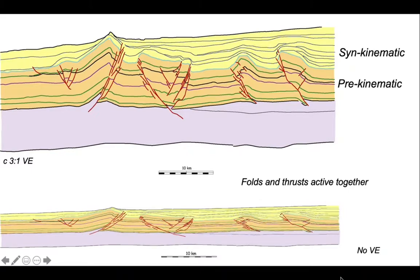So the base of the yellow package of rocks in this interpretation is deformed and that unit forms a growth succession across the folds. So this is a simple illustration of how we can use growth strata to understand the relative timing between structures in an array of folds and thrusts.